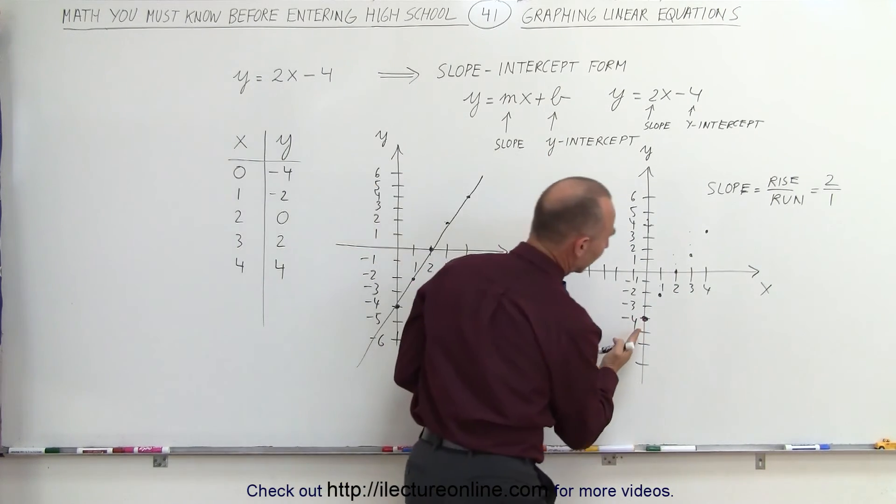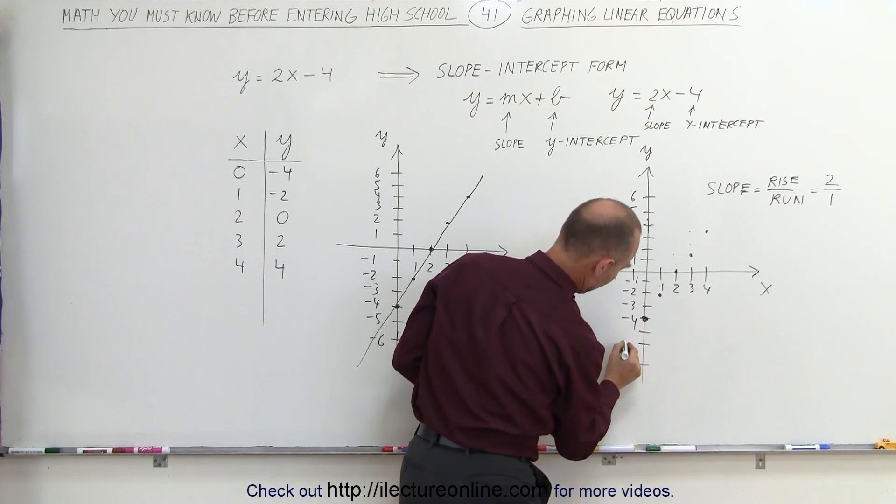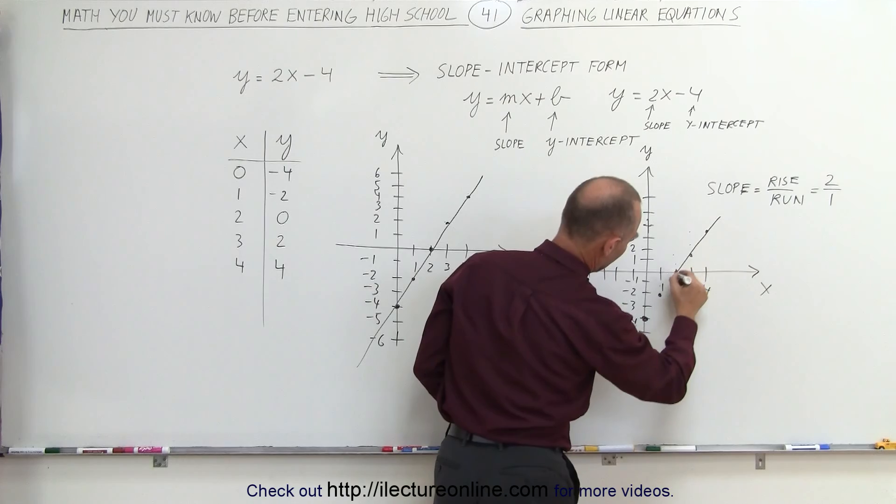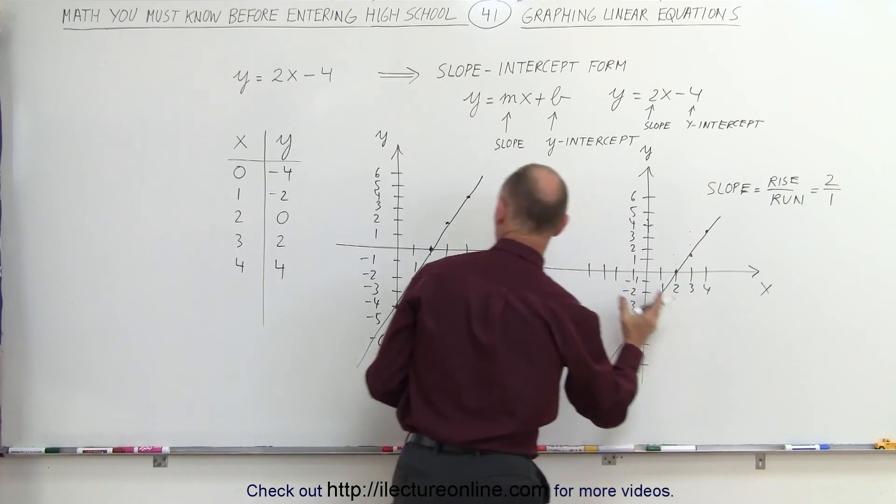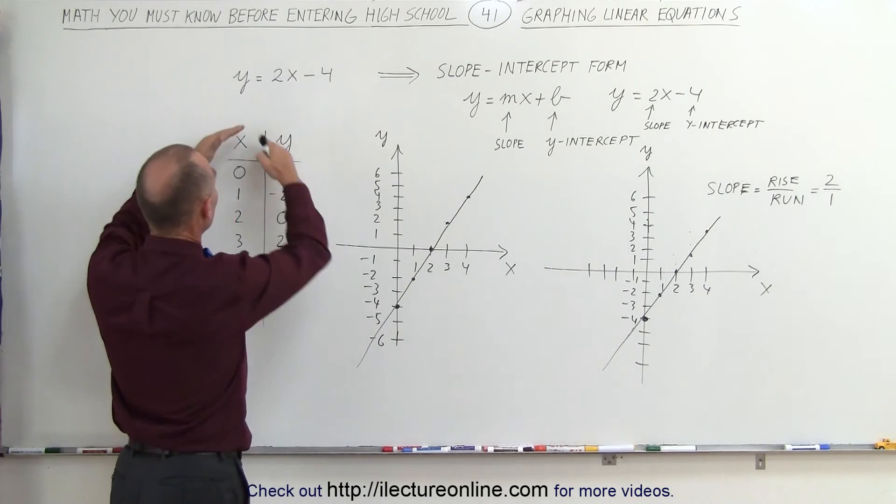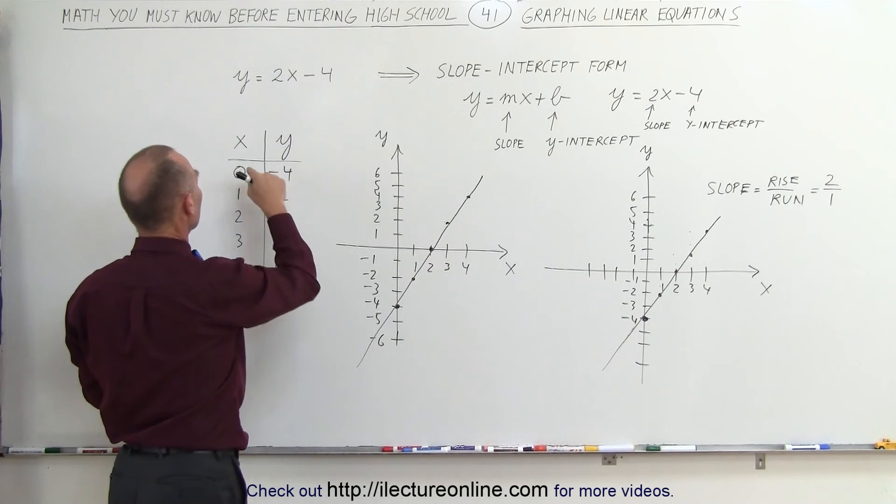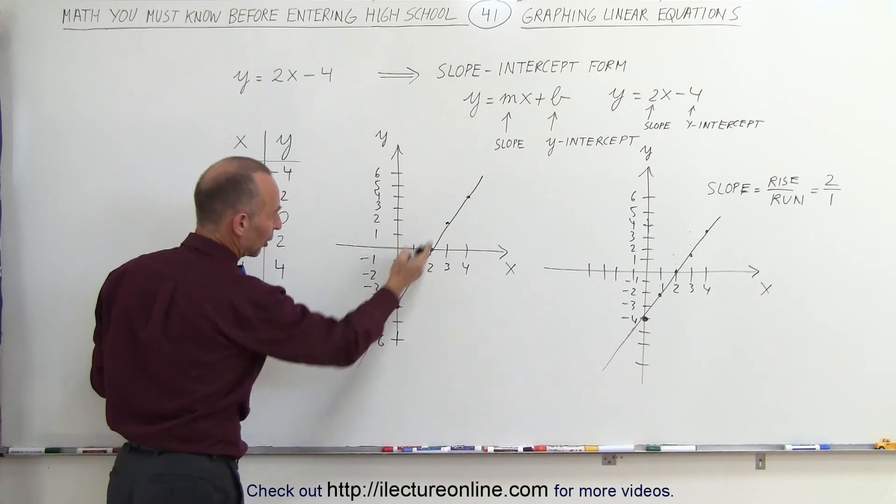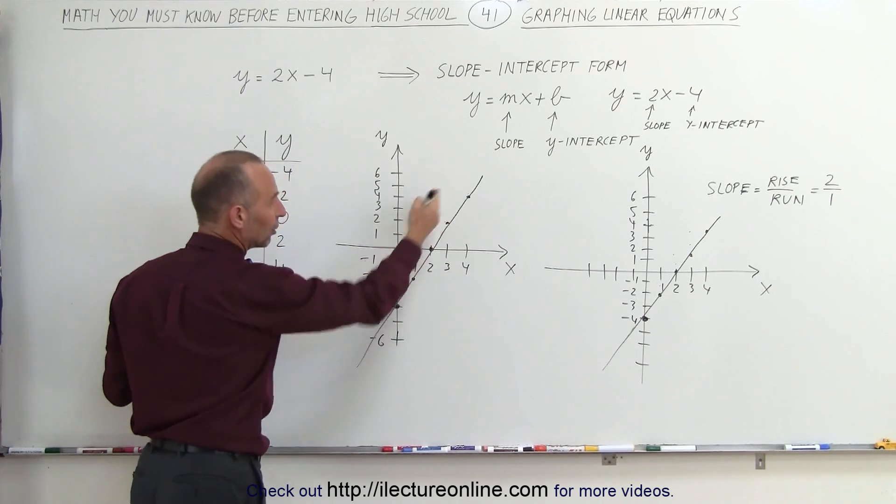All we have to do now, just like we did before, we need to connect these dots. Notice we have the very same result, which means we can draw a linear equation simply by making a table of values, plugging in specific values for x, and then getting corresponding values for y, putting them on the xy plane and connecting them, or we can use the slope-intercept form.